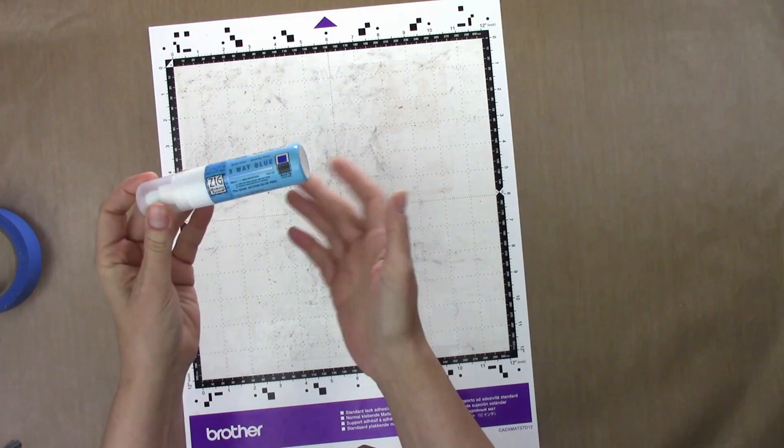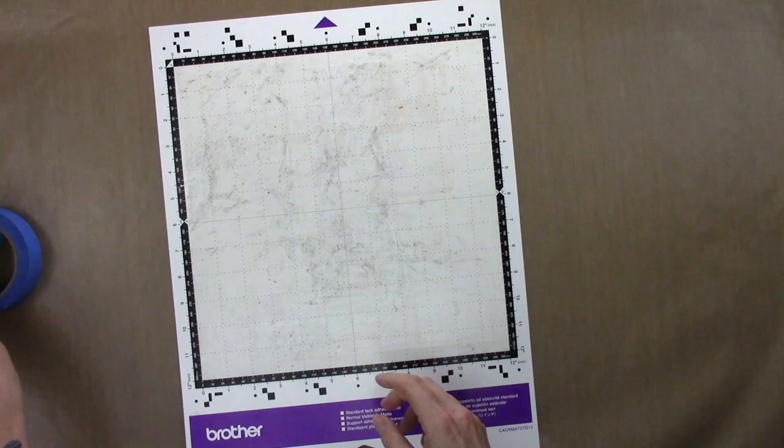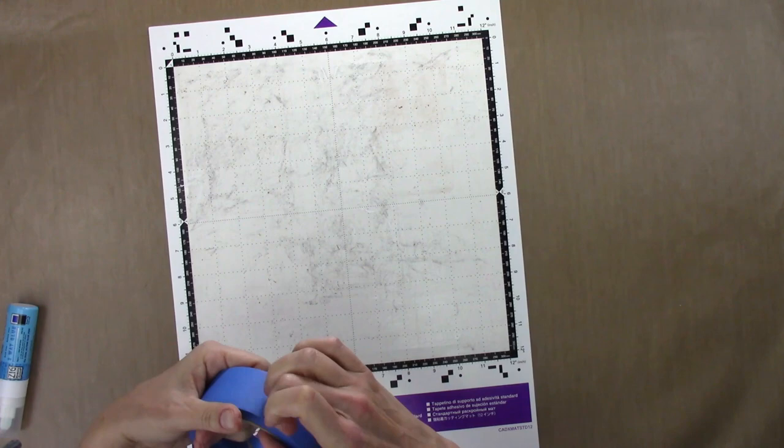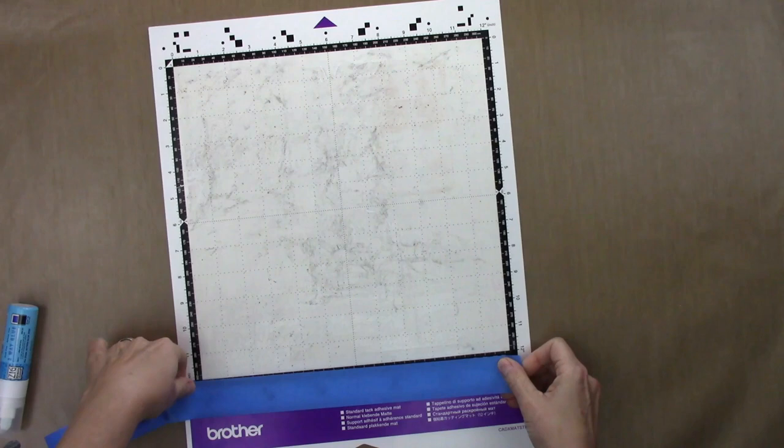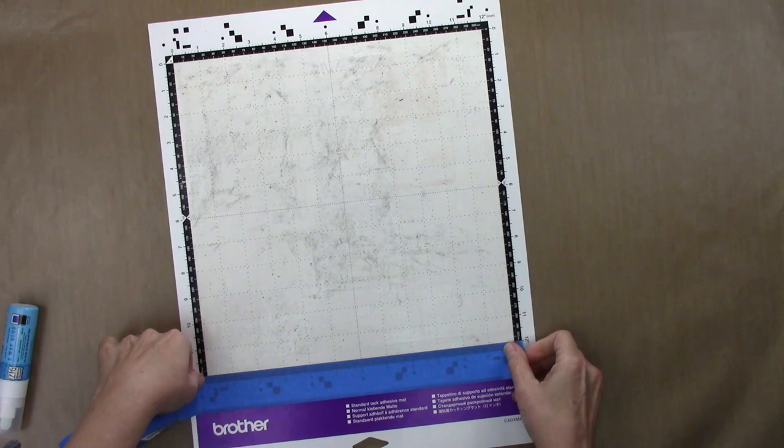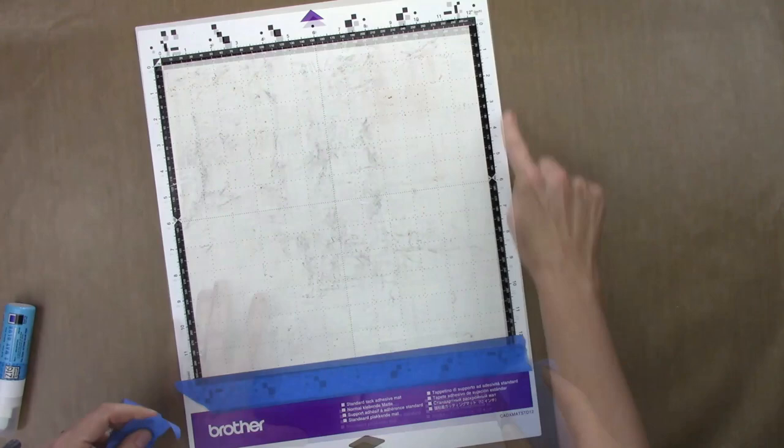I've got blue painter's tape for this—you could use washi tape or whatever you've got. I'm going to tape right along the black edge because I don't want to get glue on those black bars, and you definitely don't want to get glue over any of these black dots down here at the bottom because that's what helps your machine read the mat when you load it in.